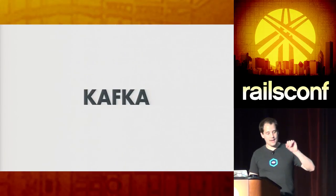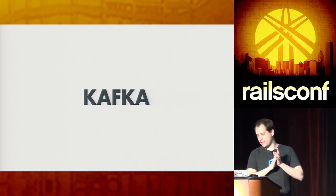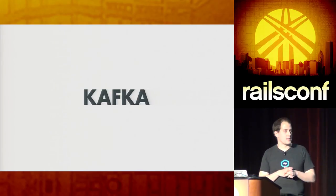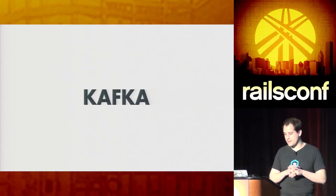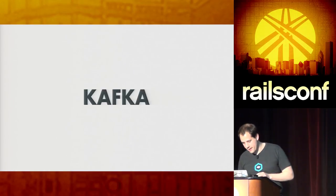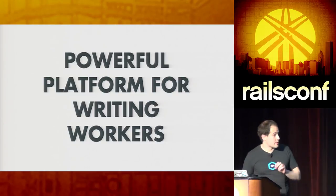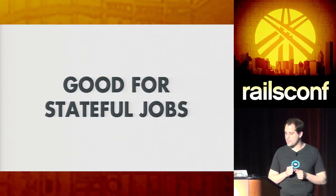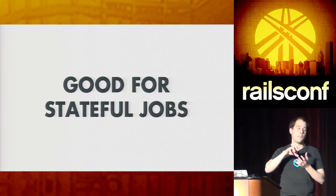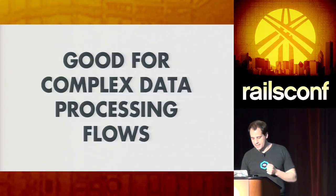In order to get this level of guarantees, the only queue system is Kafka. I would like to talk more about Kafka and why it's so awesome, but we can talk about that after. In general, even if you're not using Storm, Kafka is a really amazing tool that I highly recommend. TLDR: Storm is a really powerful platform for running workers. It's really great for stateful jobs — I mean jobs that depend on the result of previous ones. It's good for complex data processing flows.